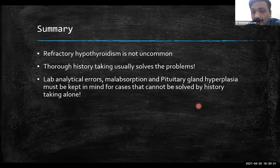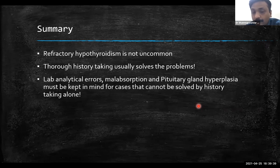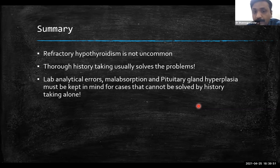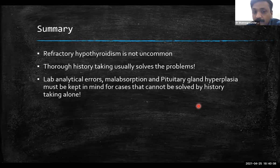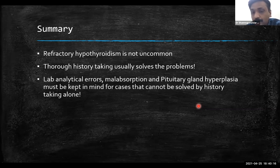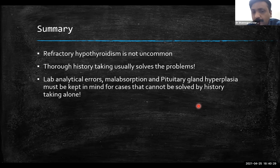In refractory hypothyroidism — which affects only about 5% of patients — first take a proper history. Most of the time the patient will reveal missing one or two days of therapy per week, or taking coffee or tea immediately after tablets. Think about lab analytical errors like macro-TSH or biotin interference. Malabsorption is very important — many cases of celiac disease have been diagnosed when TSH kept rising despite increasing dose; by giving a gluten-free diet, TSH came under control.